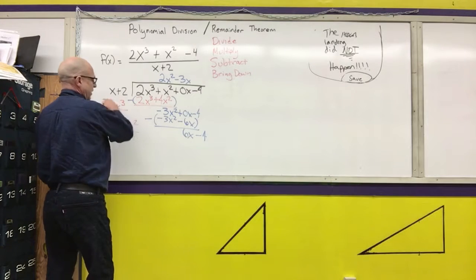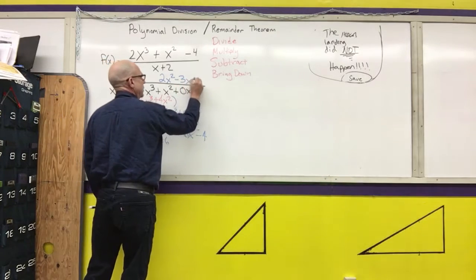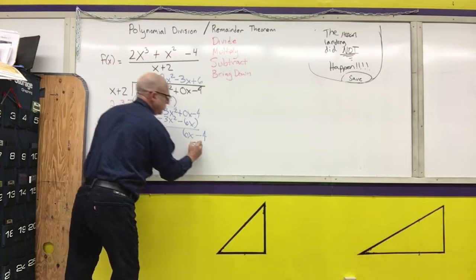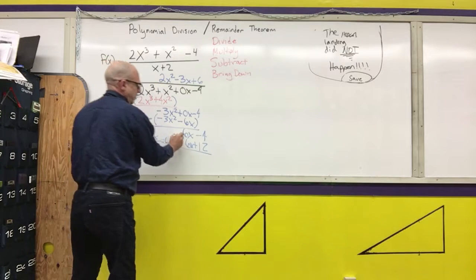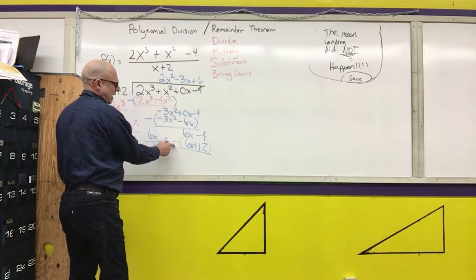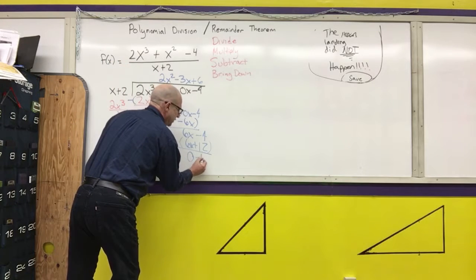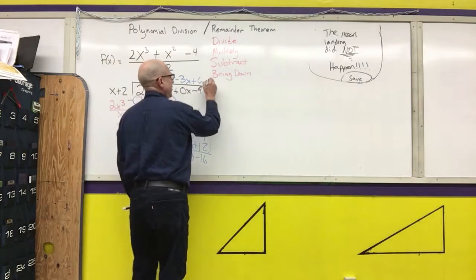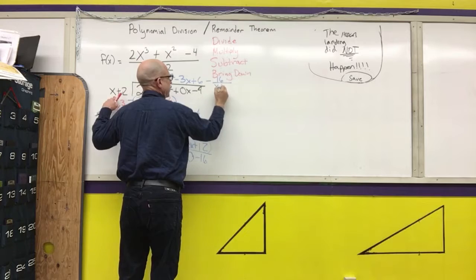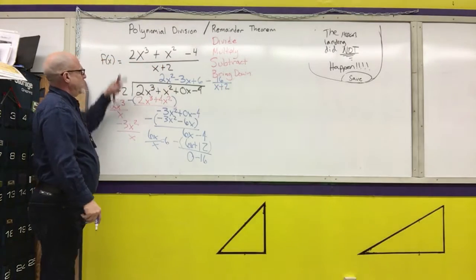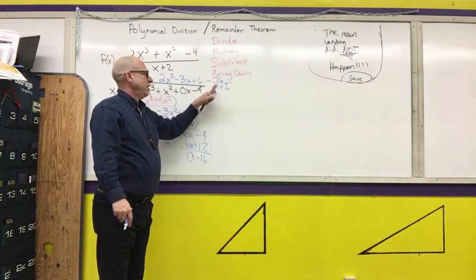Divide — leading term divided by leading term: 6x over x is 6. Multiply: 6 times 2 is 12, and 6 times x is 6x. Subtract — any number minus itself is 0. And negative 4 minus 12 is negative 16. I'm going to bring that negative 16 up here and write it over my original divisor. So the answer to this division problem is 2x squared minus 3x plus 6 minus 16 over x plus 2.